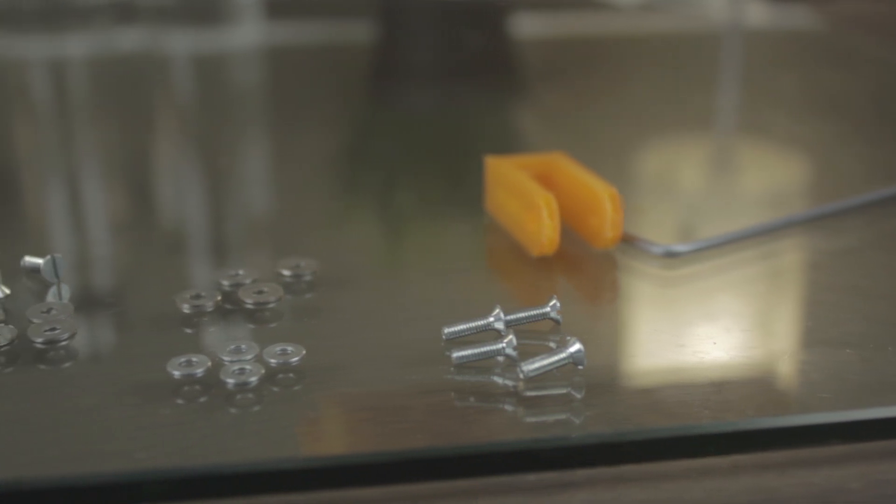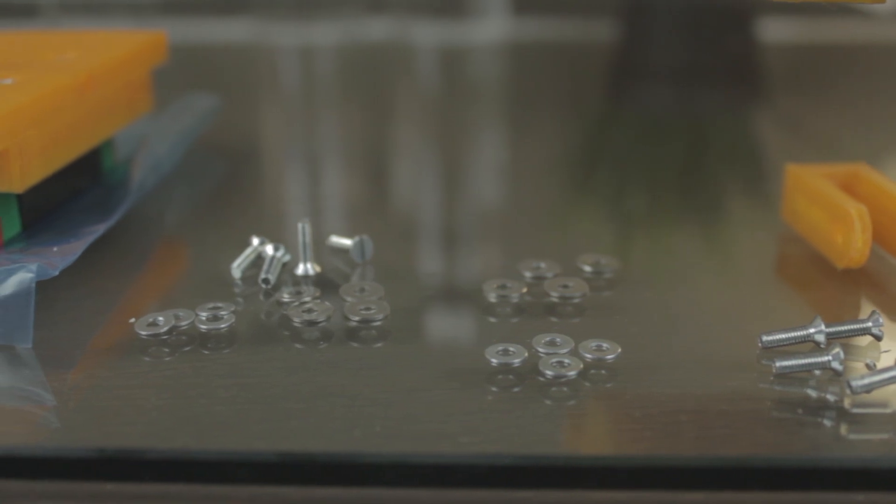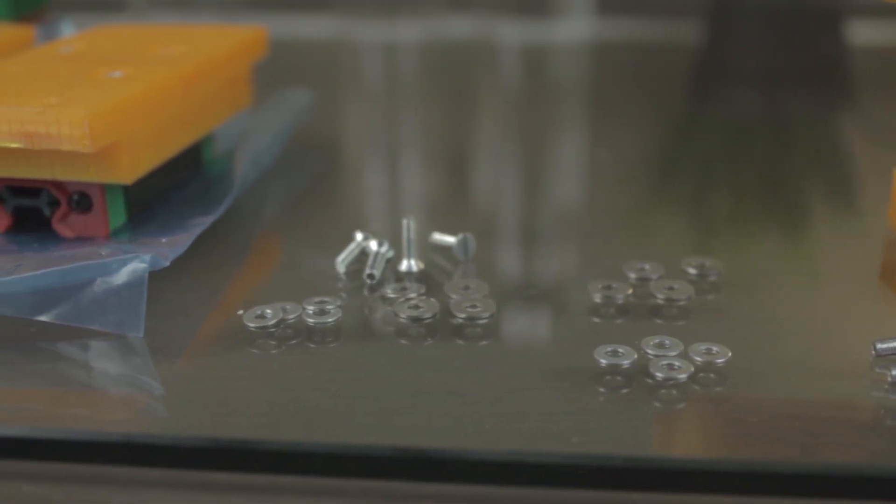The next components we're going to install into the assembly are going to be the two NEMA 17 stepper motors. And to install them, we'll need four M3 washers and four M3x10mm bolts for each of the motors, making a total of 8 washers and 8 bolts.